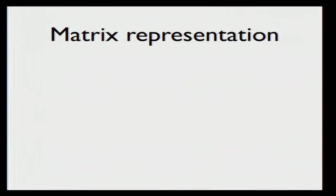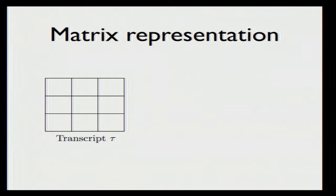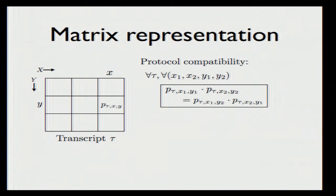To capture this formally, I'm going to switch to the following matrix representation. For every protocol transcript tau, I'm going to write down a probability matrix. The columns of this matrix are labeled by the inputs of the first party, and the rows are labeled by the inputs of the second party. Each cell represents the probability of receiving this transcript as a result of the interaction when the inputs are fixed to x and y. With this notation, it is known that if tau is a protocol transcript, then a condition called the protocol compatibility condition — also known as the copy-paste condition in the communication complexity world — must be satisfied by these probabilities.